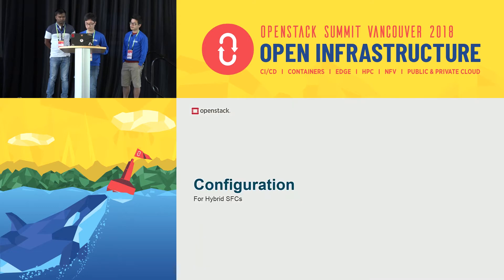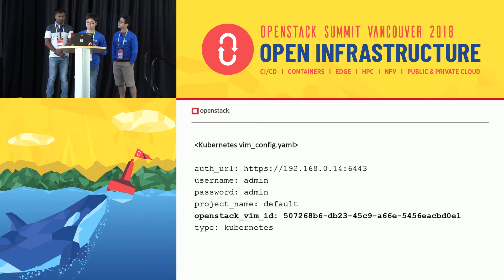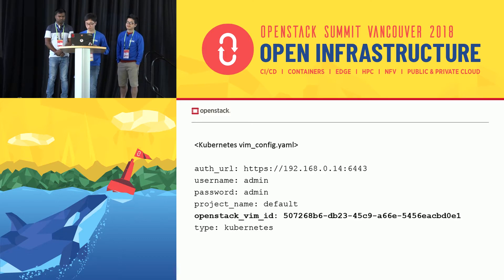For configuration, we need to add the OpenStack VIM ID in the Kubernetes VIM configuration when registering the Kubernetes VIM. This is the requirement for making service function chaining between two VIMs.